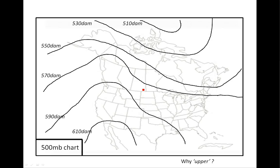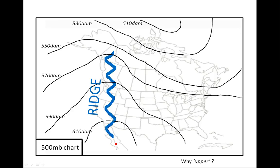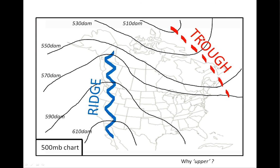Here's our 500 millibar chart again. Imagine it as a topographic map with higher terrain across the south and lower terrain across the north — those tall columns of air in the south versus the short columns in the north. It's easy to label the upper ridge extending from Mexico up over British Columbia, and the upper trough coming down from the Arctic over Newfoundland and Labrador. We call them upper ridges and upper troughs because the 500 millibar chart represents somewhere between 5,000 and 6,000 meters above mean sea level.